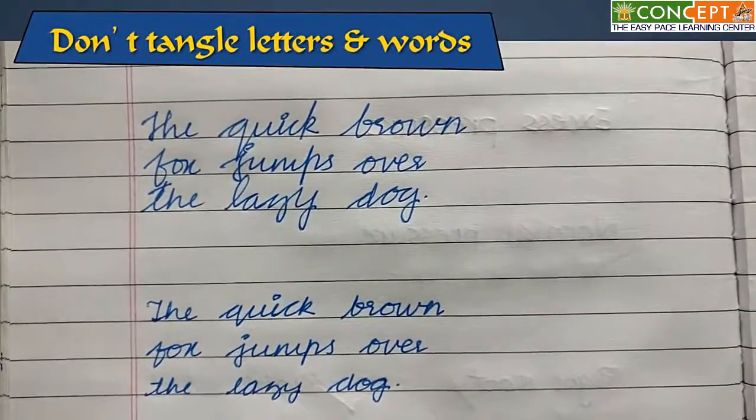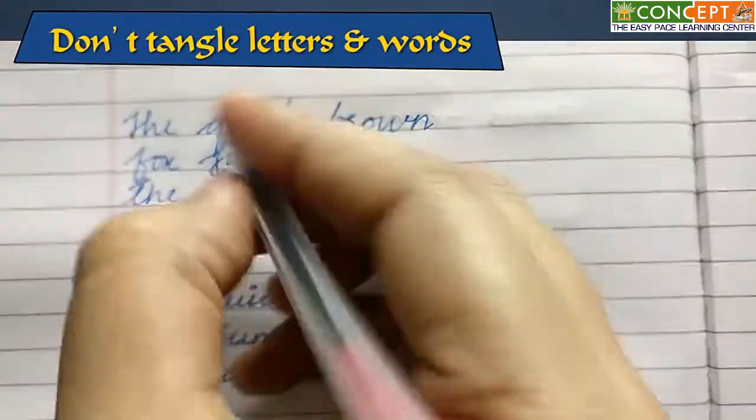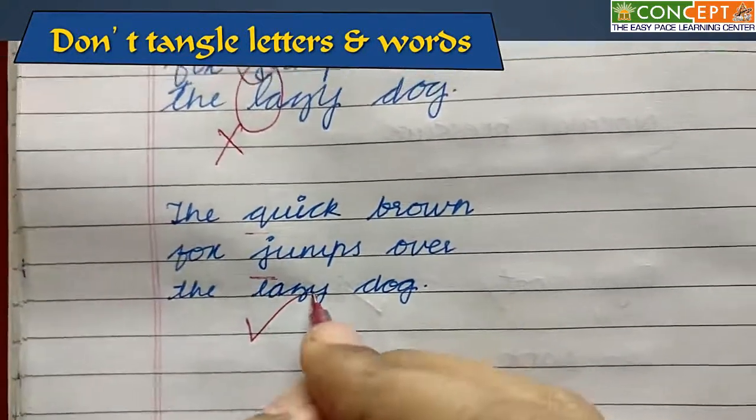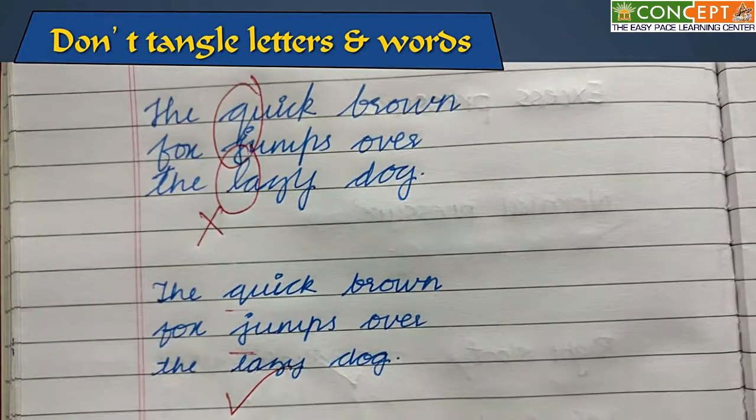When we write something in a hurry, we tend to tangle the letters. That is when your ascenders and descenders aren't written properly, so try avoiding that.